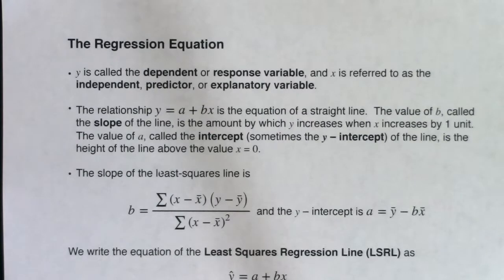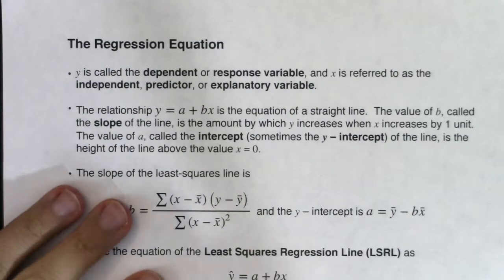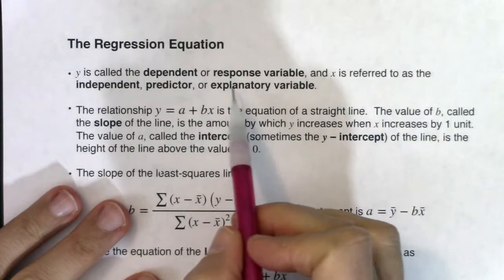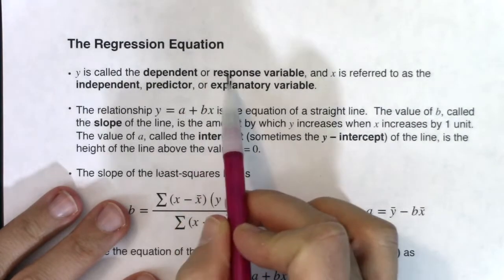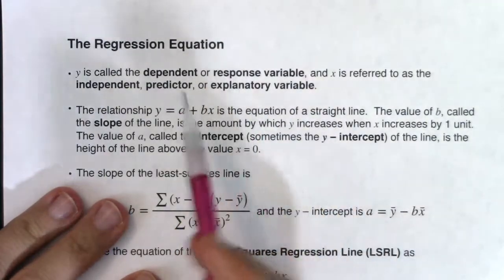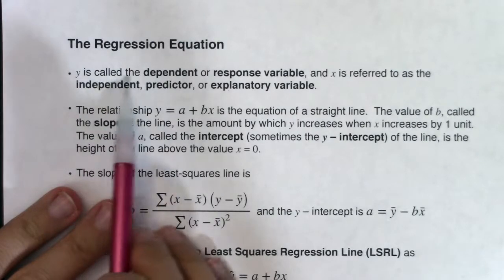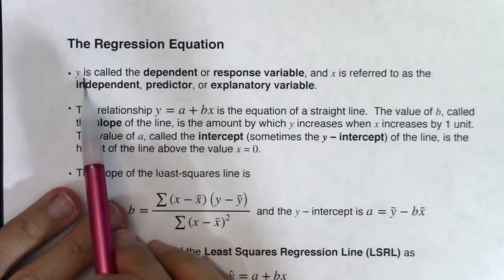We're finally at the regression equation. Let's review a little bit of vocab from chapter 1. When we talked about x and y, we called them the explanatory and response variable respectively. Let's pick up that idea again and add a few more vocab terms onto it.